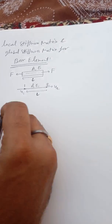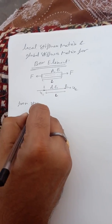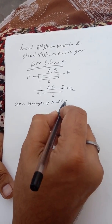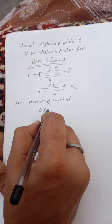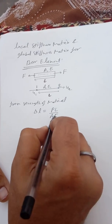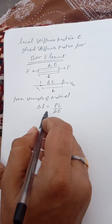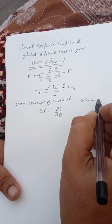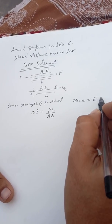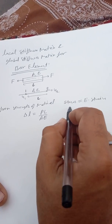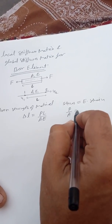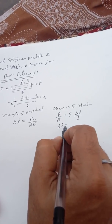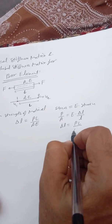What is the stiffness? From strength of materials, delta L is equal to PL upon AE. As we know from Hooke's law, stress is equal to E dot strain. Stress is load upon area, that is E dot strain equals delta L upon L. So now we have delta L is equal to PL upon AE.